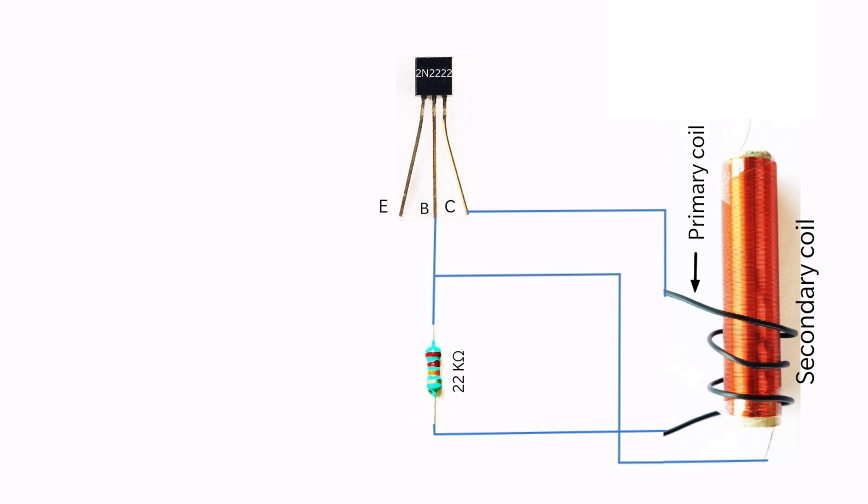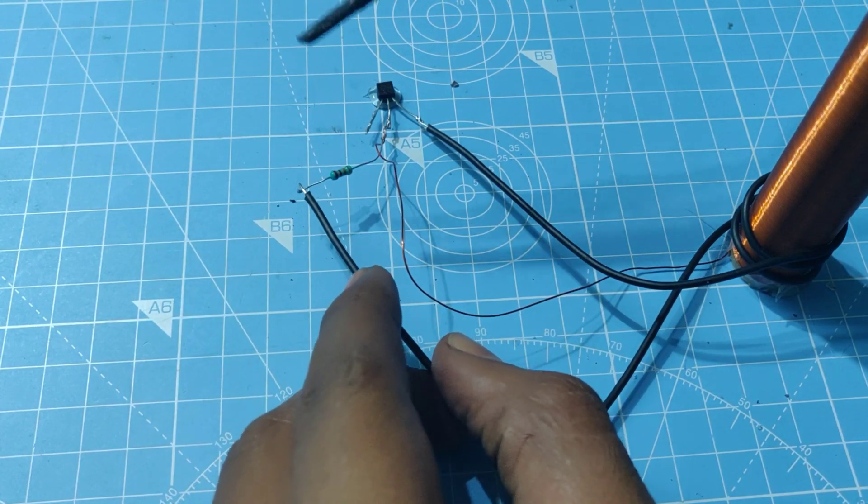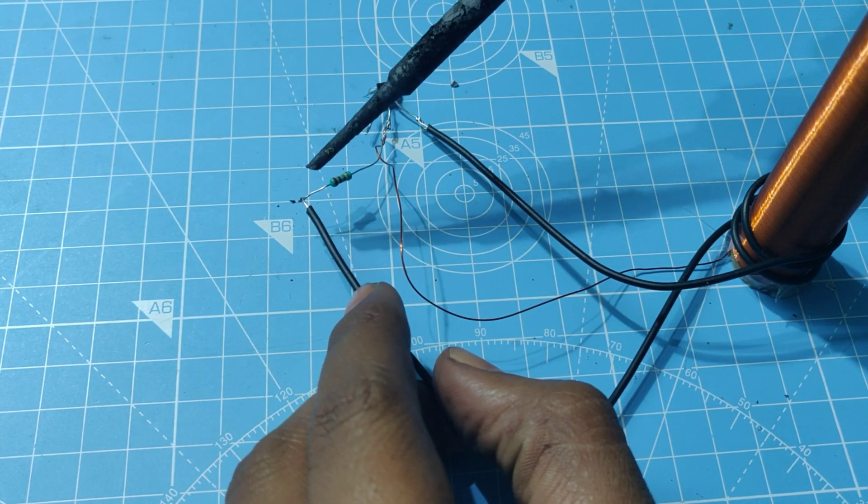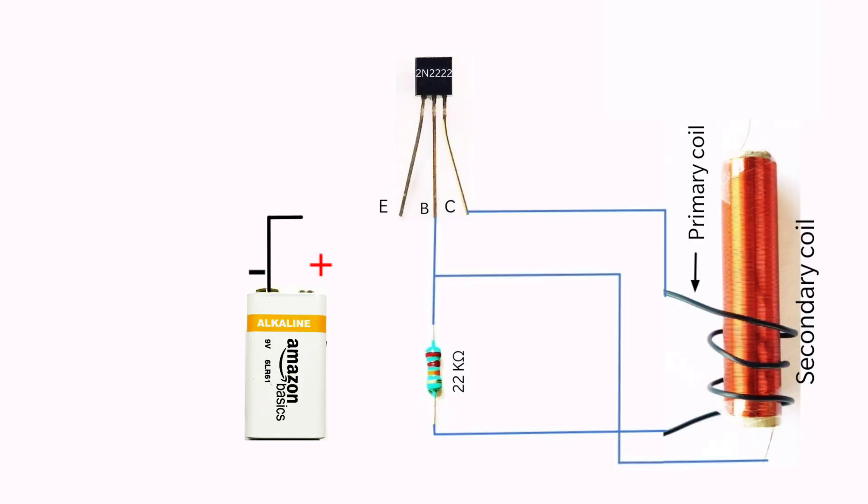Connect the bottom end of the primary coil to the 22 kilo ohm resistor. Connect the negative DC voltage supply to the emitter of the transistor. Connect the positive DC voltage supply to the 22 kilo ohm resistor.